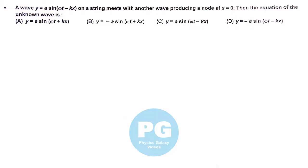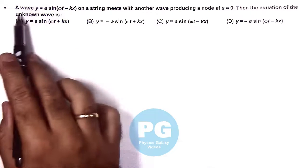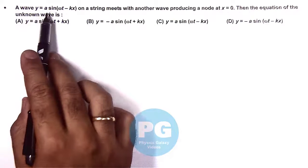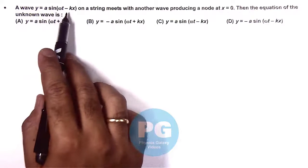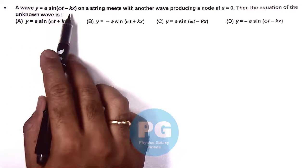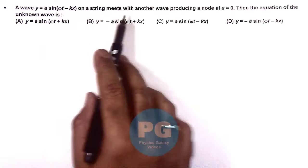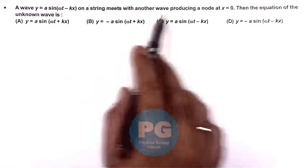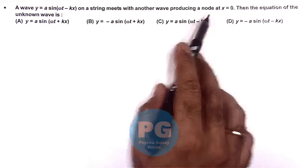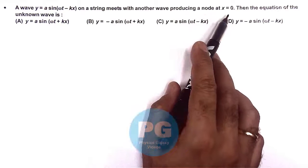In this question, we are given that a wave y = a·sin(ωt - kx) on a string meets with another wave, producing a node at x = 0. The equation of the unknown wave is to be determined.